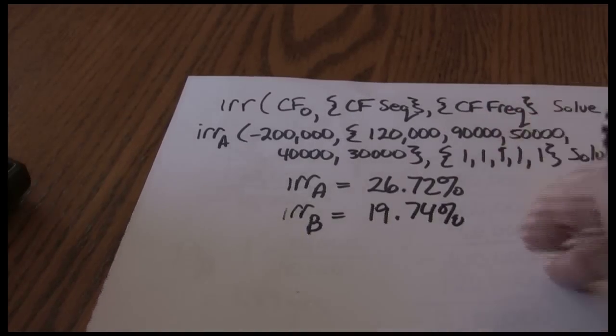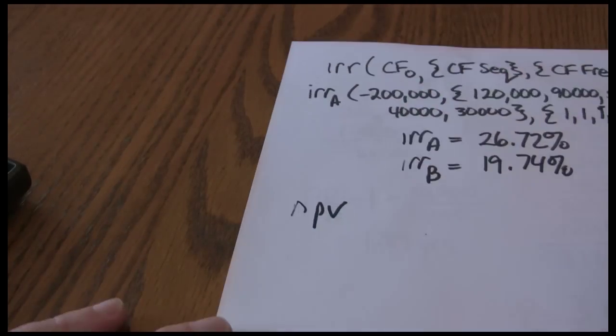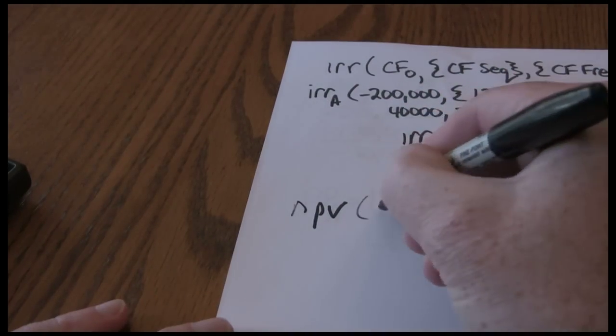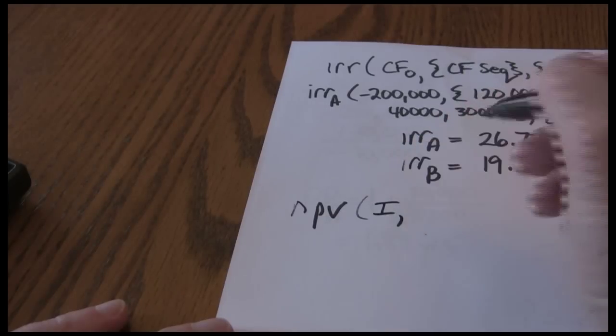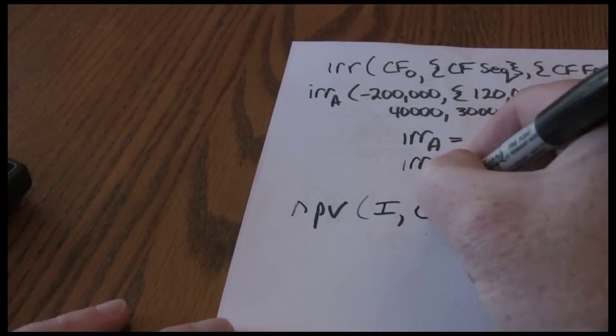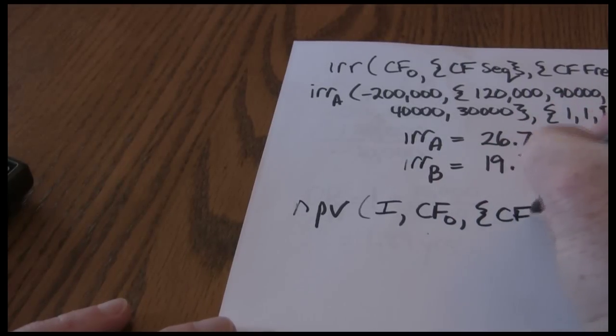Next I want to do my net present values. Net present value starts out with my discount rate, then CF0, then my cash flow sequence.